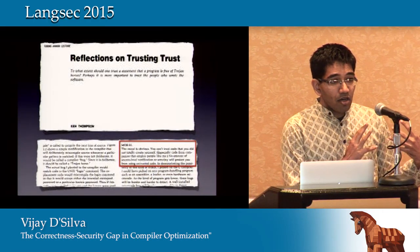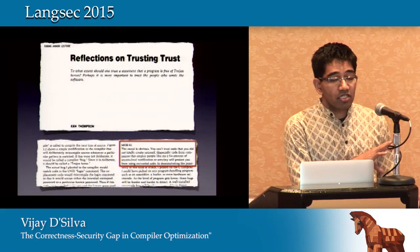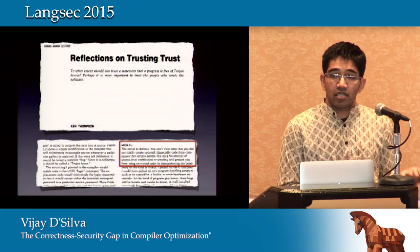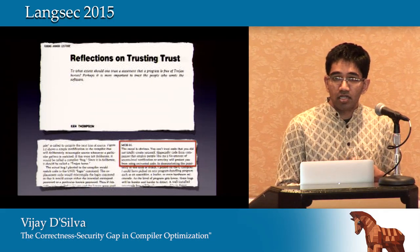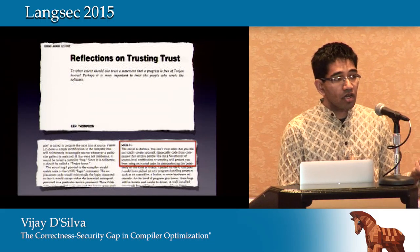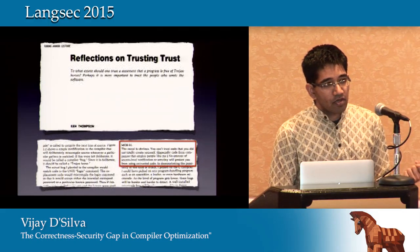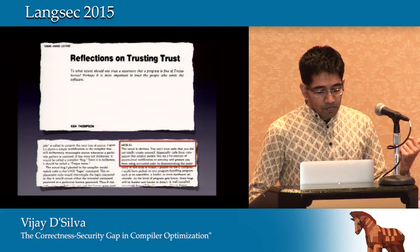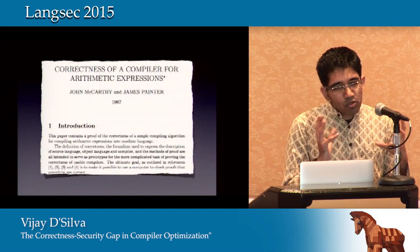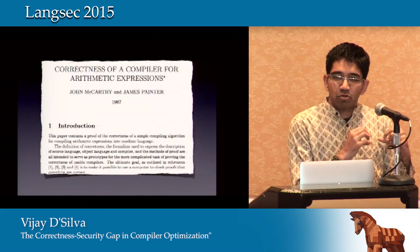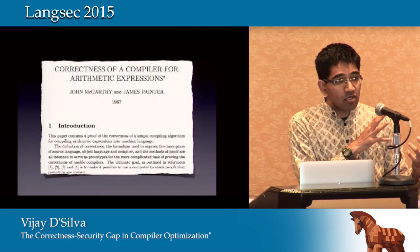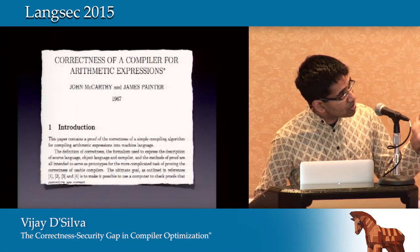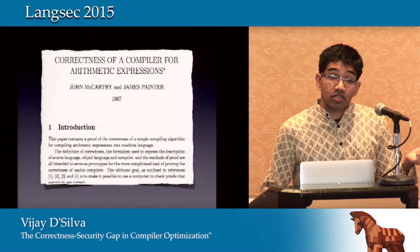A prominent example is Ken Thompson in his Turing Award lecture, where he asked, 'Do you trust your compiler?' He gave a specific example of how a compiler could introduce a Trojan, and put out that question. It's hard to find people who have explicitly expressed the same concern, but a lot of people have worked around it.